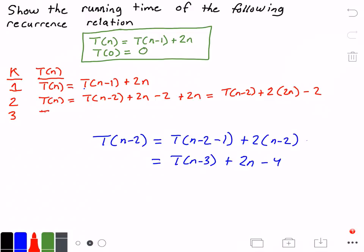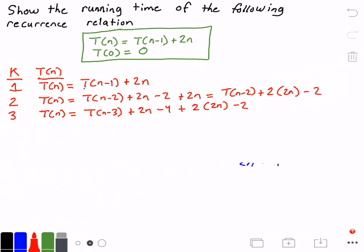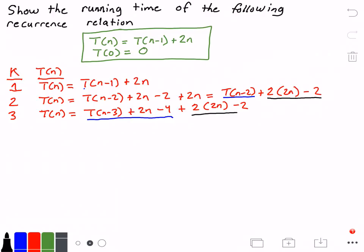At step k=3, our function t(n) = t(n-3) + 2(n-4) + 2·2·(n-2). So now t(n-2) has become t(n-3) + 2(n-4), and we add 2·2·(n-2) from the previous step.